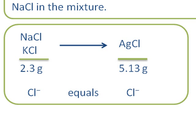How do we do this? If we think about it, on the left hand side of our equation we have a mixture of sodium chloride and potassium chloride. All we know is the total mass, 2.3 grams. On the right hand side we have just silver chloride. All we know is the total mass, 5.13 grams.